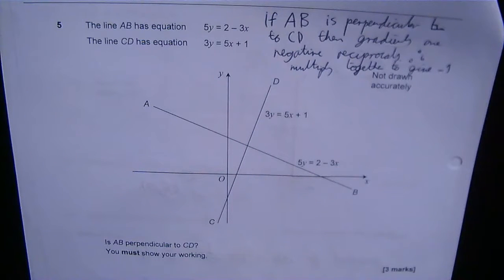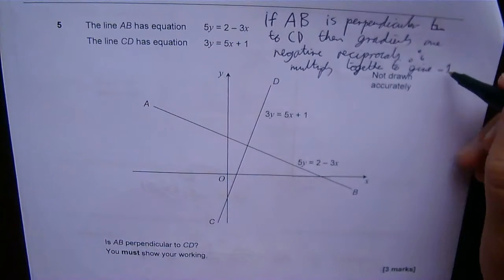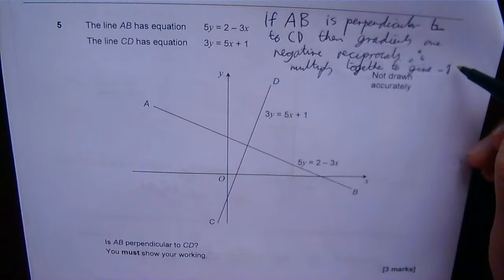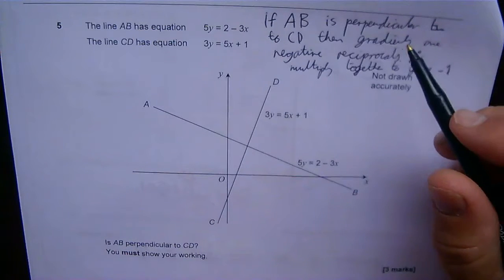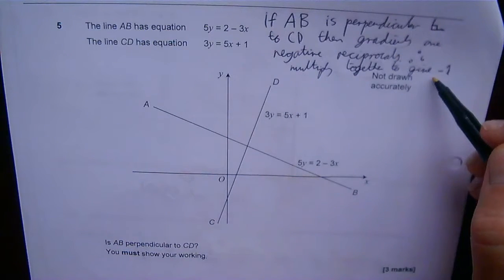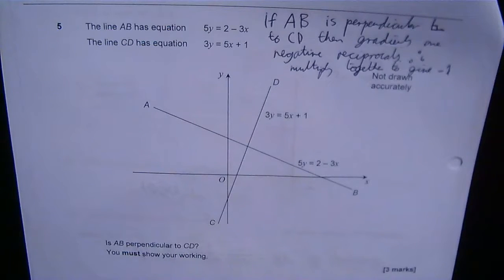I'd like you to write that down to reinforce it. Looking at the mark scheme, it seems very important that you show they multiply together to give minus one, not just state that they're negative reciprocals.